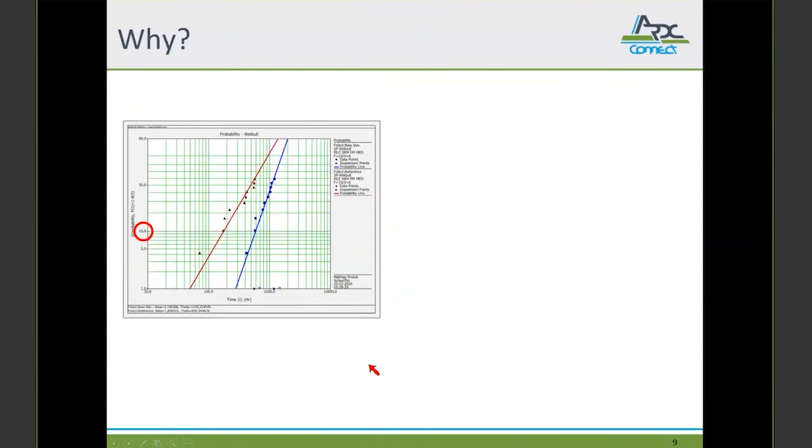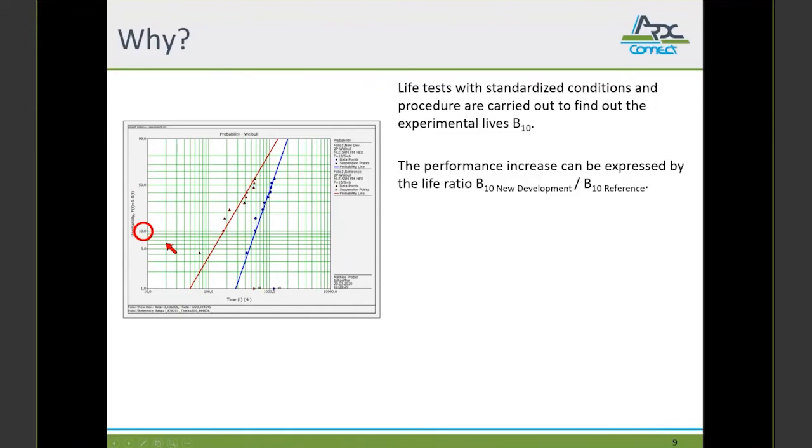Here you can see a fictive example. For example, the red distribution stands for reference product and the blue marked distribution for a new development. As I mentioned before, our focus is on 10% unreliability or failure probability. The life tests in R&D are carried out with standardized conditions and procedures. That means that the load, speed, lubrication, and operating temperatures are fixed so that B10 results directly can be compared to each other.